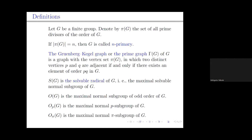We use mainly standard notation and terminology, which you can find for example in the Atlas of Finite Groups. Let G be a finite group. Denote by π(G) the set of all prime divisors of the order of G. If the order of π(G) equals m, then G is called m-primary. The Greenberg-Kegel graph, or prime graph Γ(G), is a graph with vertex set π(G), in which two distinct prime divisors p and q are adjacent if and only if there exists an element of order pq in G.